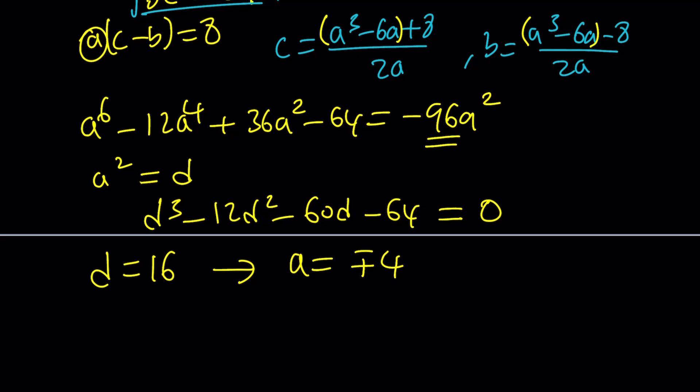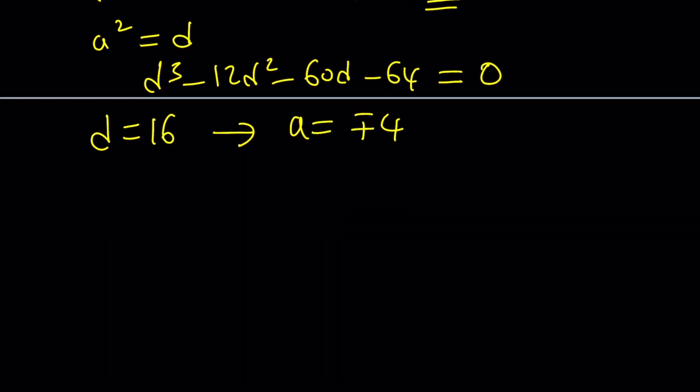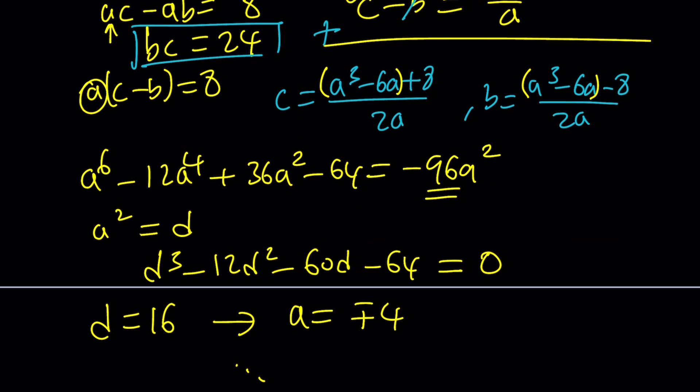After substitution, you can replace a squared with another variable d and put everything on the same side. That's going to give you d cubed minus 12d squared minus 60d minus 64 equals 0. From here, you're going to get d equals 16 and a equals plus minus 4. Then by using the a value, you can plug it in and find the b and the c values.